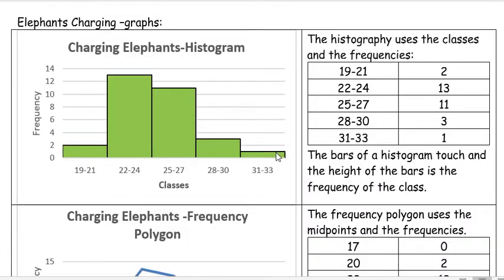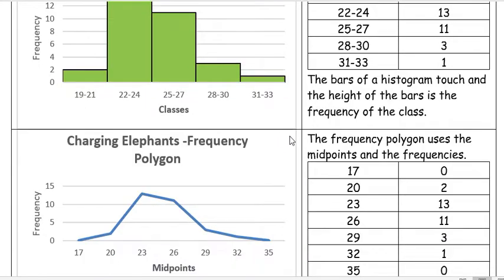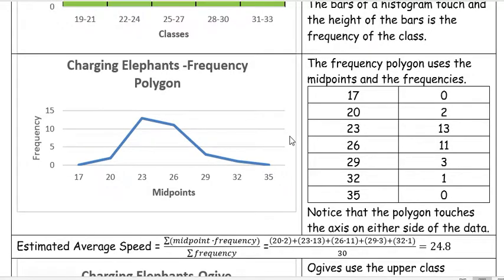Another kind of chart or graph that we can do is a frequency polygon. A frequency polygon uses the midpoints and the frequencies. We found the midpoints before: 20, 23, 26, 29, and 32.